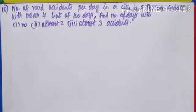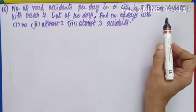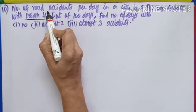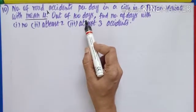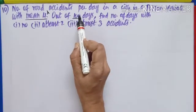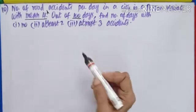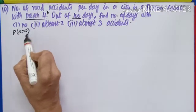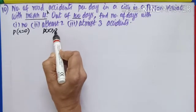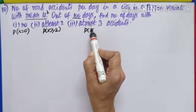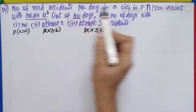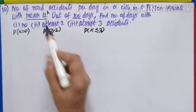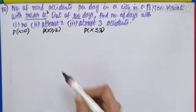Question number 10: the number of road accidents per day in a city is a Poisson variate with mean 4. As I read 'mean', I call that lambda. Out of 100 days — this tells me I must multiply my final answer by 100. No accident means x = 0, at least 2 means x ≥ 2, at most 3 means x ≤ 3. Let us find e^(−4) from the table and proceed.